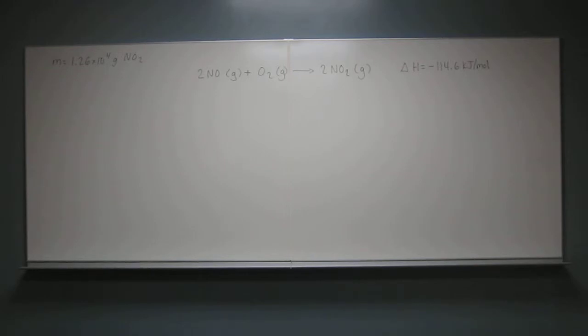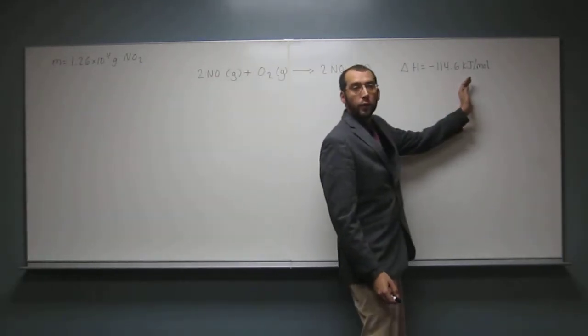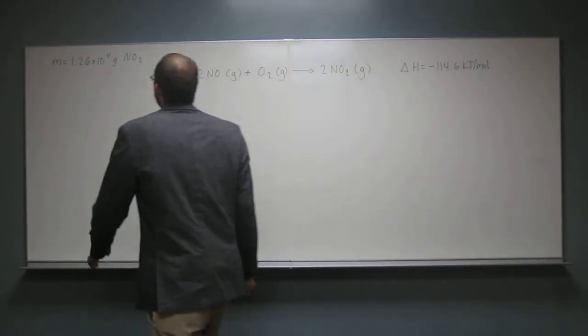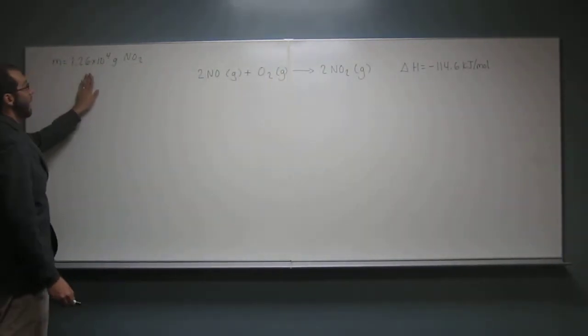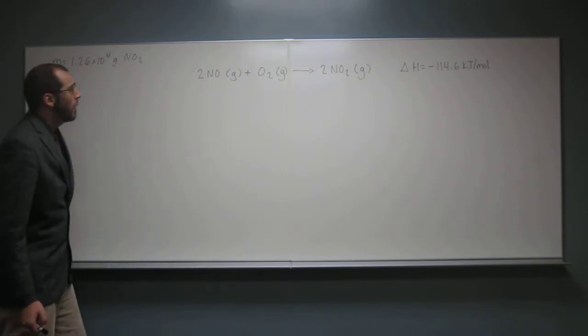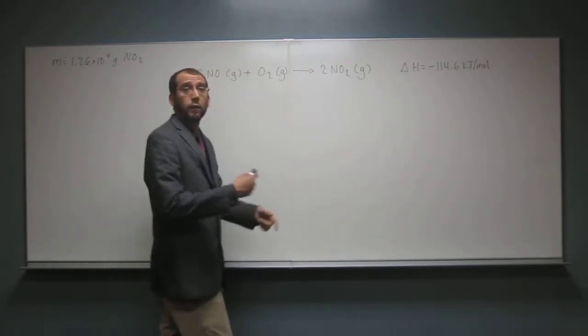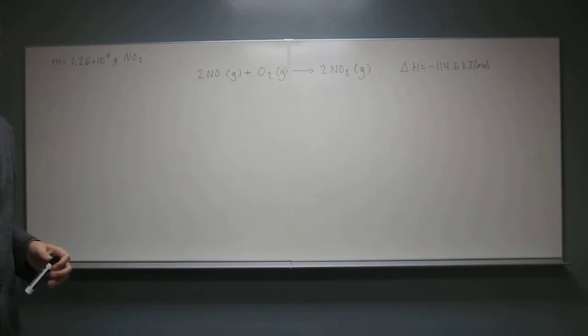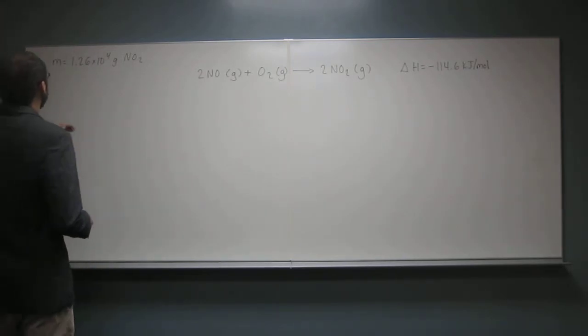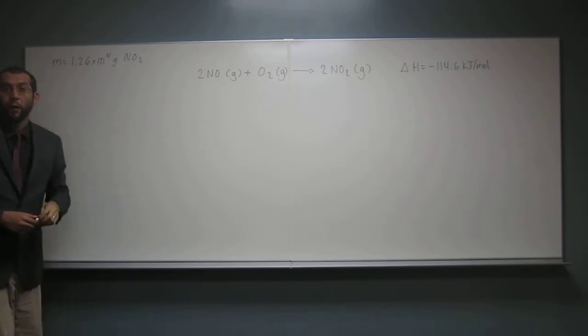And then it gives you the heat per mole produced. So here it tells you the mass of nitrogen dioxide. In order to use this chemical equation, remember we have to convert things into moles. So the first thing we're going to have to do is convert this mass into moles. So how do we do that? Do you remember how to do that?